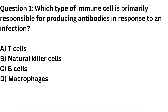Question 1. Which type of immune cell is primarily responsible for producing antibodies in response to an infection? A. T-cells. B. Natural killer cells. C. B-cells. D. Macrophages.